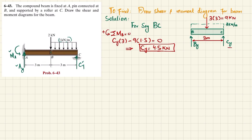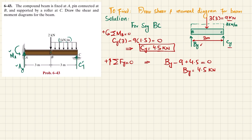We can also find B_Y using the equilibrium condition that the sum of all forces along the Y direction equals zero, taking upward as positive. So B_Y − 9 + 4.5 = 0, therefore B_Y = 4.5 kN.